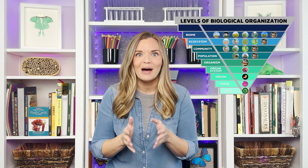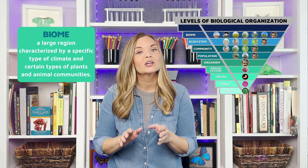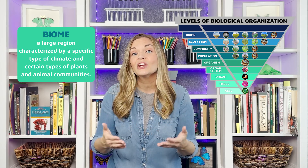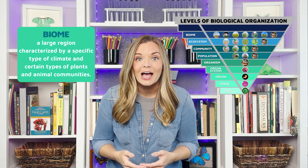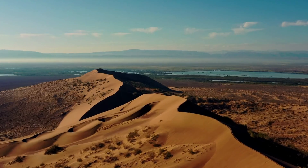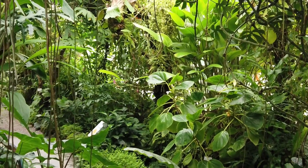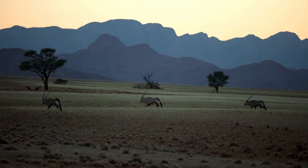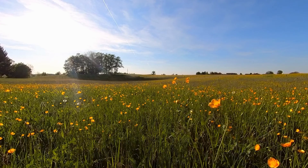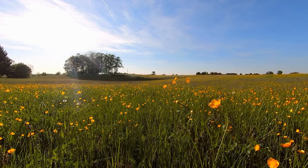Life's levels of organization don't end there. If we keep zooming out, we find biomes — large regions of ecosystems sharing a similar climate. There is a diverse variety of biomes on Earth, including deserts, oceans, rainforests, savannahs, and temperate grasslands where our turtle lives, and more.